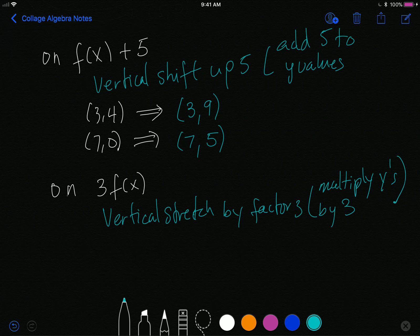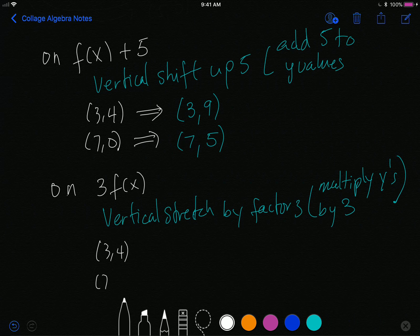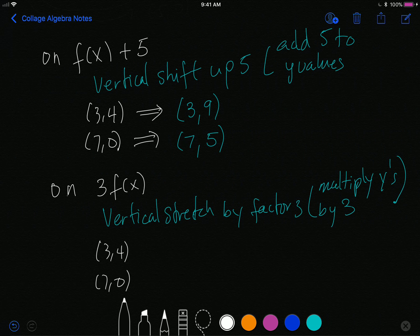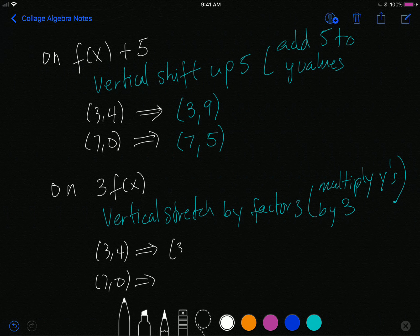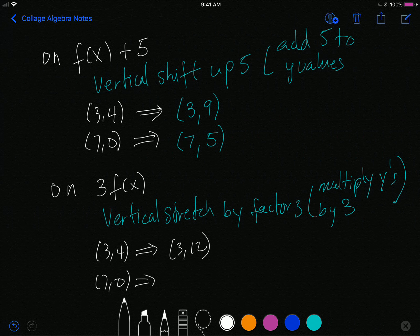And so my x's will stay the same, but my y values will get tripled. And so then that would be (3,12), and then this would be (7,0). Well, 0 tripled is still 0.